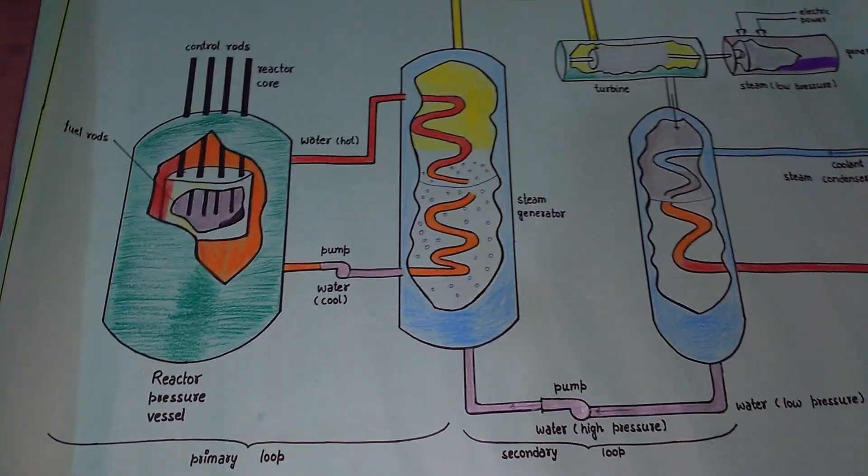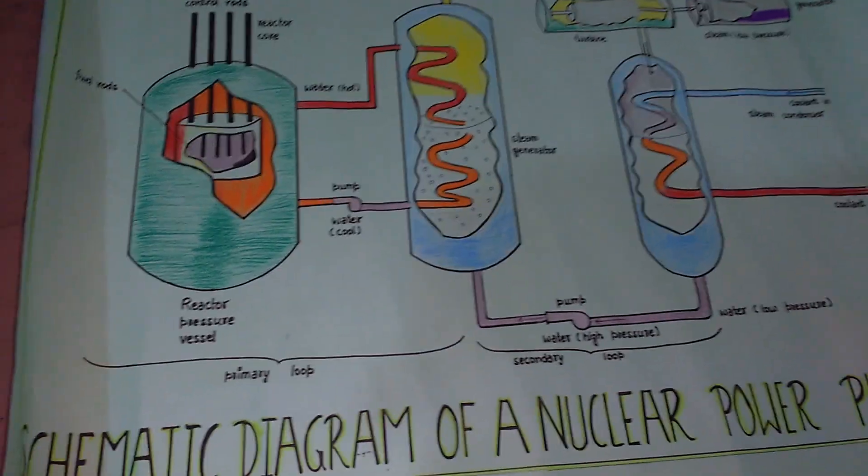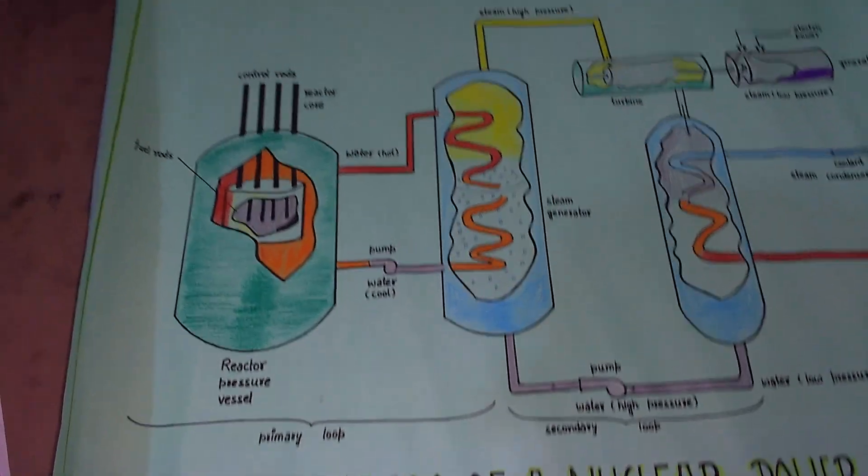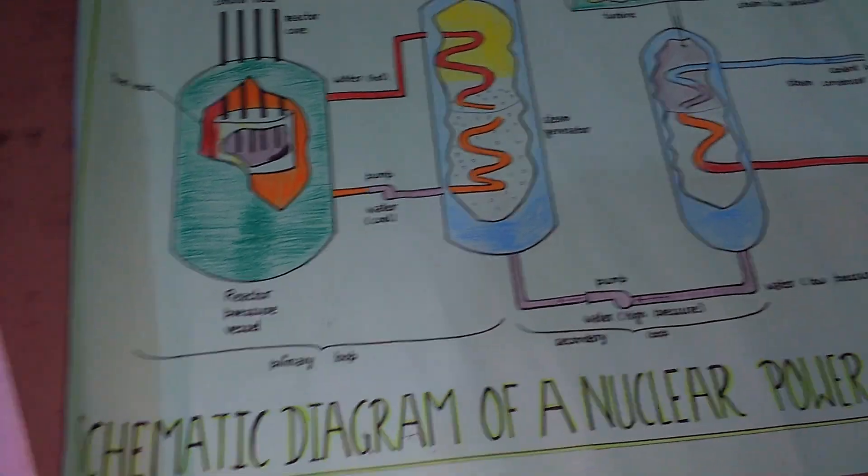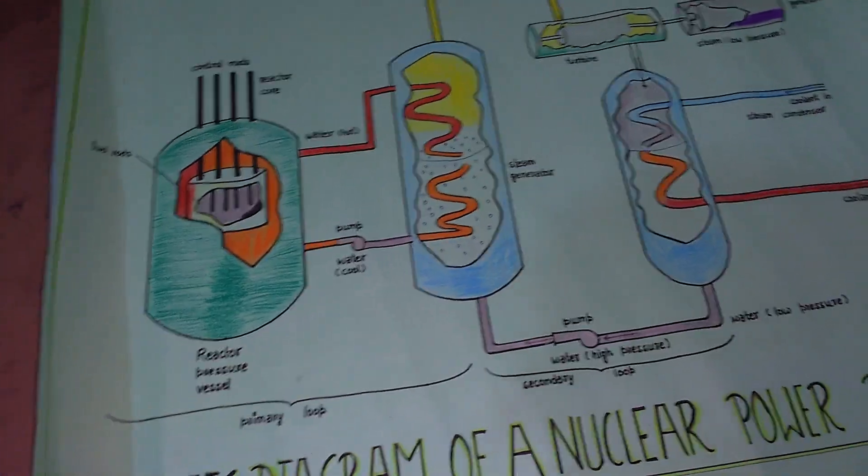This is a controlled chain reaction in a nuclear reactor. For this reaction, we need 40% of neutrons, and one uranium-235 produces 2.53 neutrons.